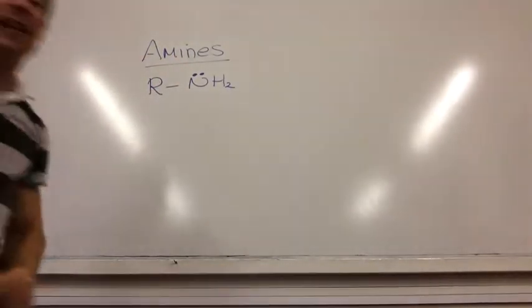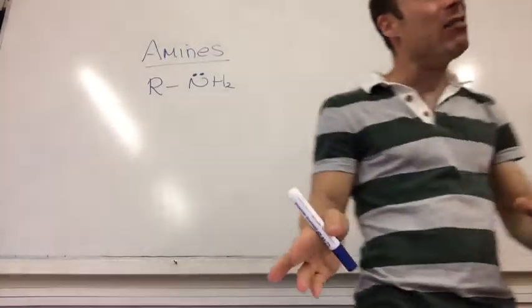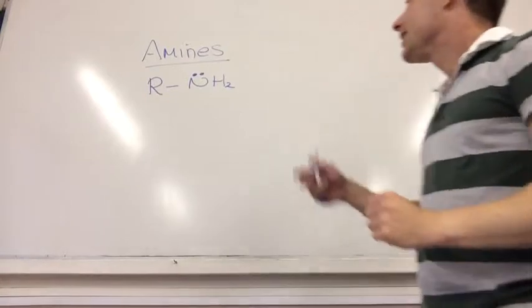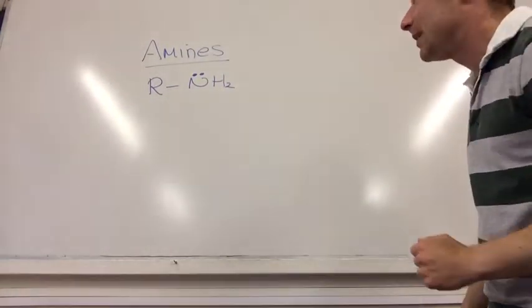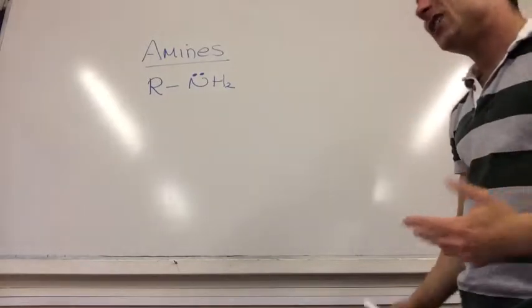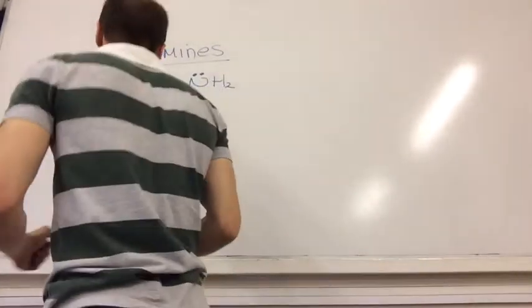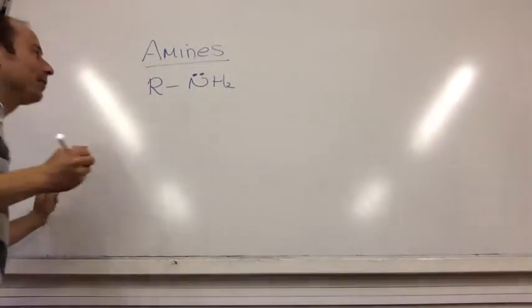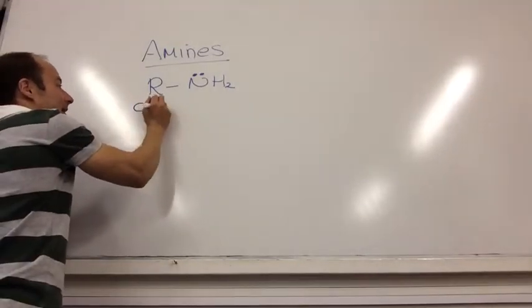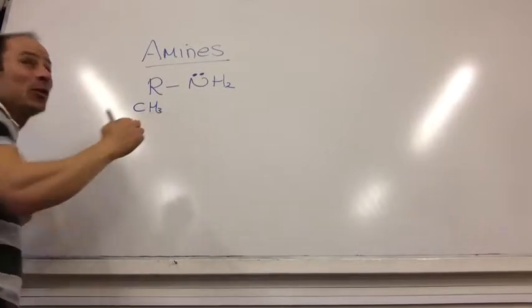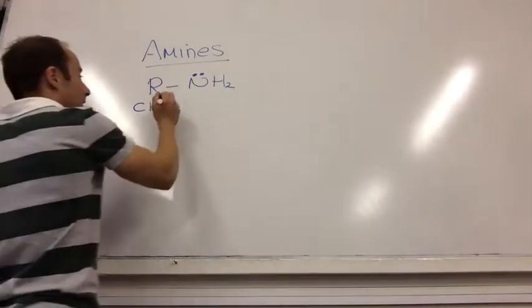But where people go wrong in the exam they say, oh it means he's got a lone pair on him, he can act like a base. It's a lone pair on the nitrogen atom which means he can act as a base. So let's do an example of him acting as a base. Let's have a look at that. Naming is dead easy. If R is CH3, what's CH3? What would we call a CH3 group? Methyl. Methyl.